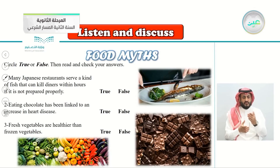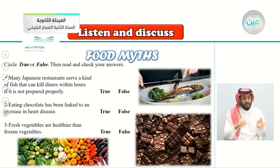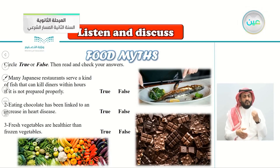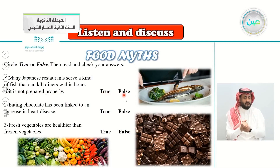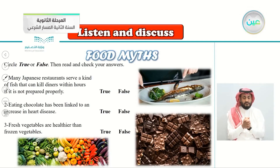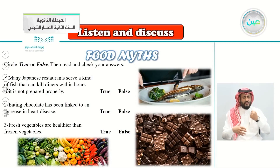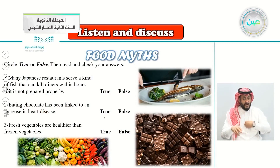Number one: many Japanese restaurants serve a kind of fish that can kill diners within hours if it is not prepared properly. Do you think this is true or false? Number two: eating chocolate has been linked to an increase in heart disease. Do you think there is a link between eating chocolate and heart disease?